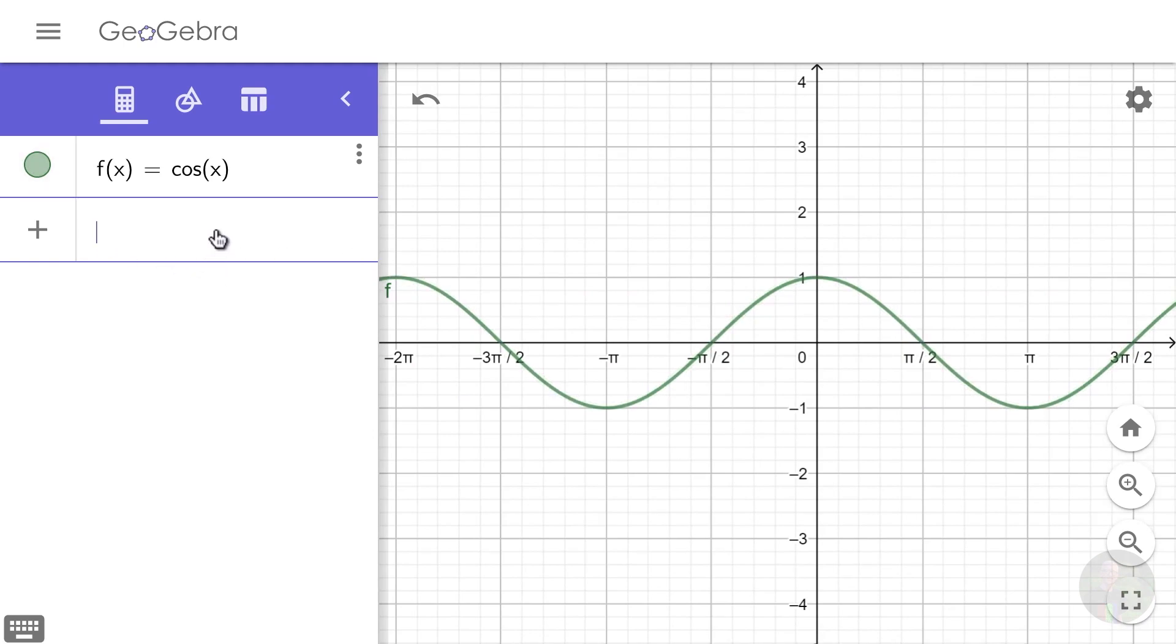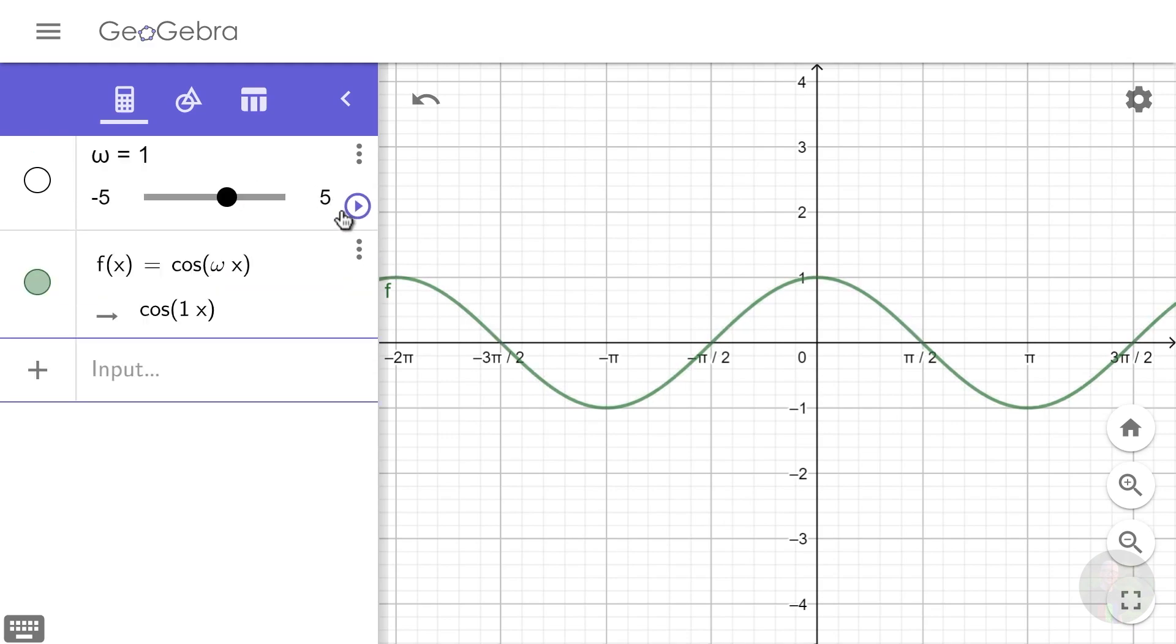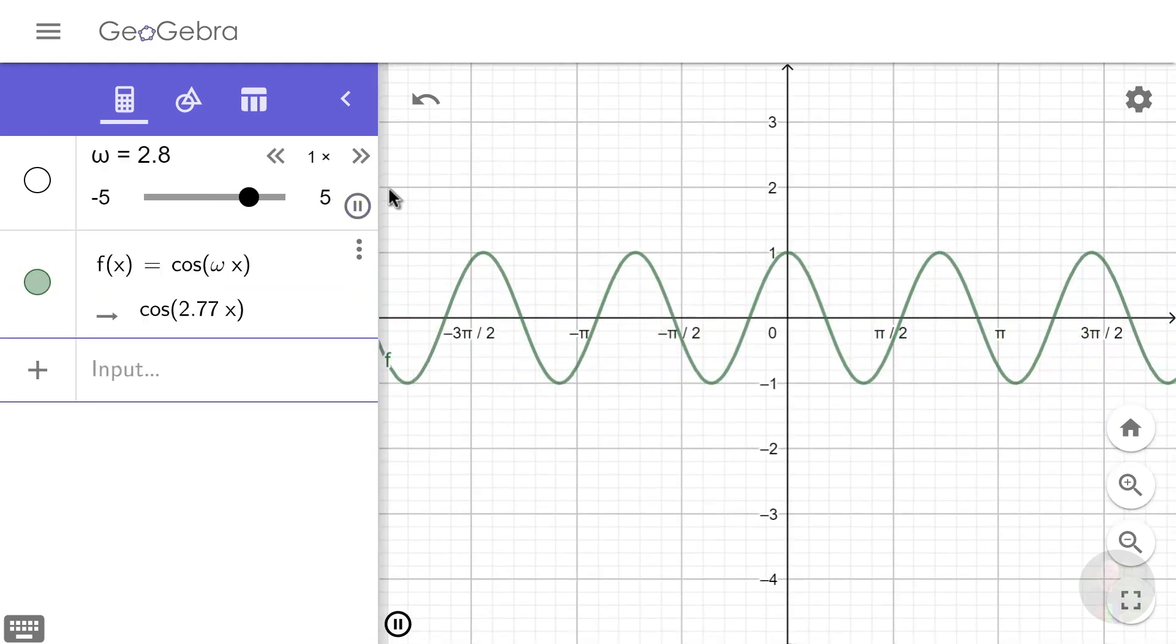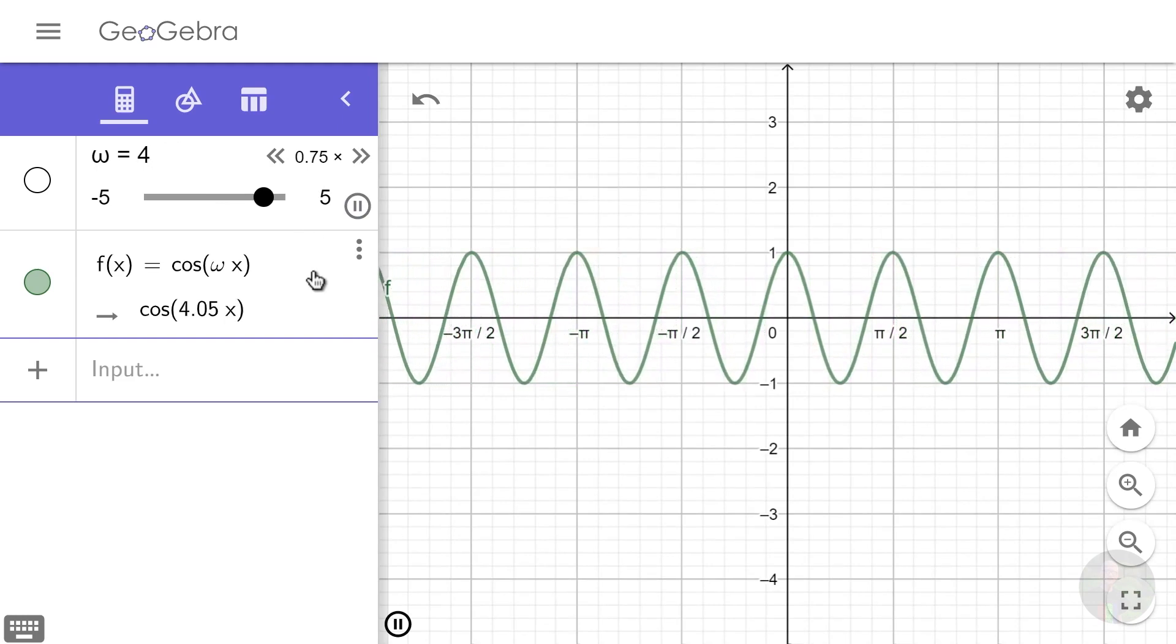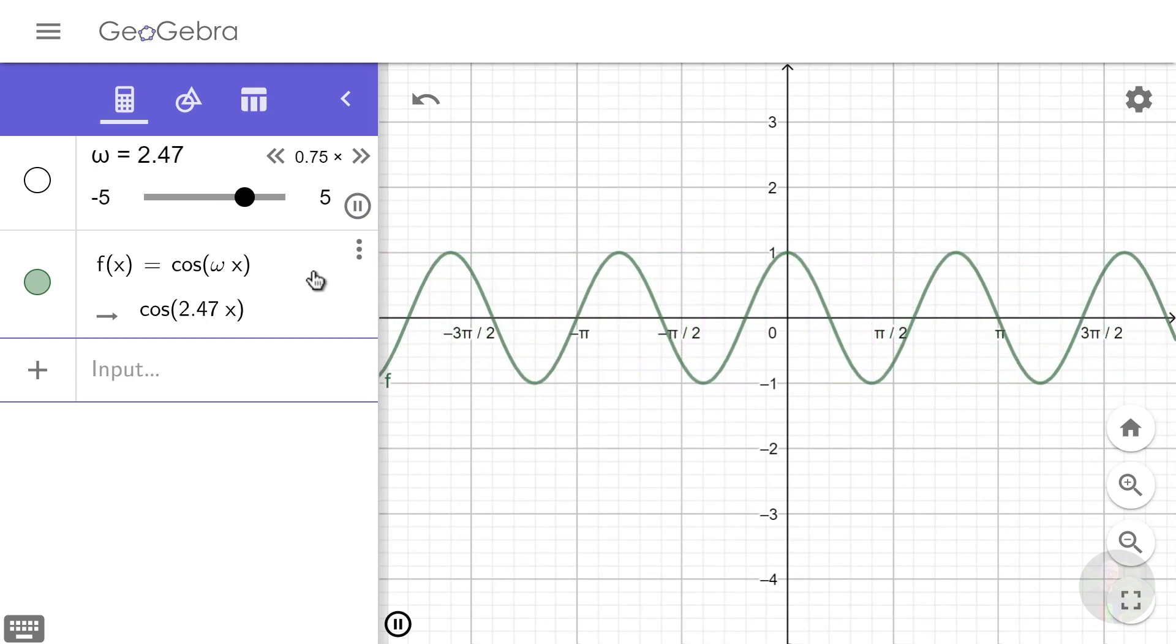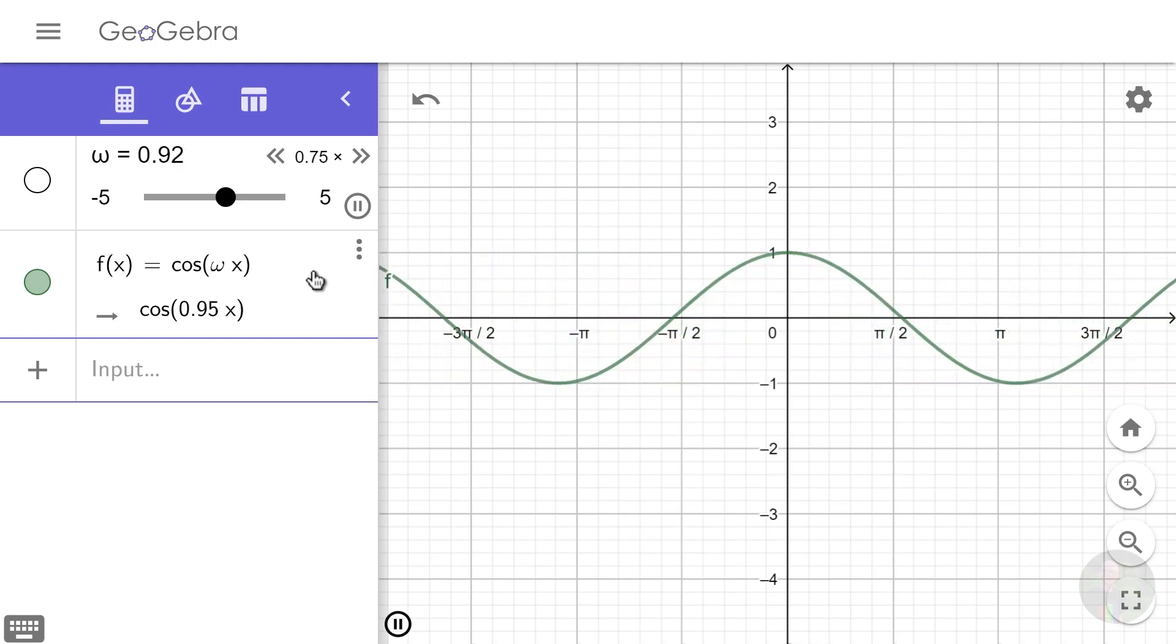So I'm gonna take a variable omega, and I'm gonna multiply the input with that. And as you can see, as the input increases, the graph squishes along x axis, and as the value decreases, the graph diffuses along x axis, until it gets to 0, and then it starts to squish again.